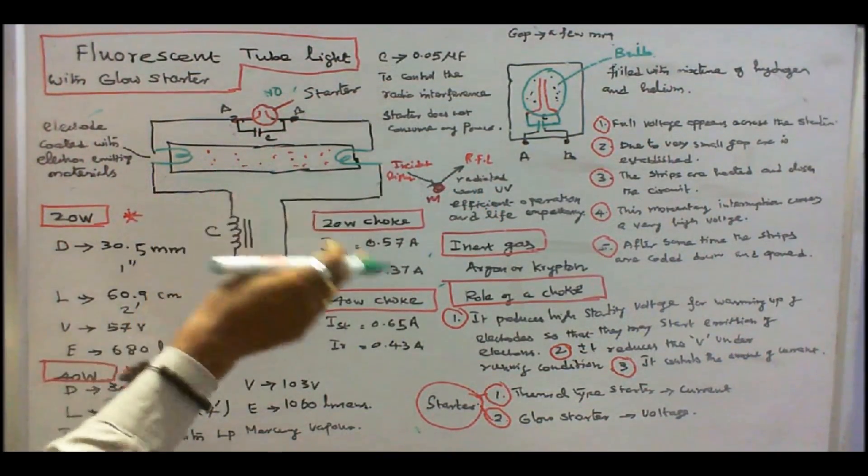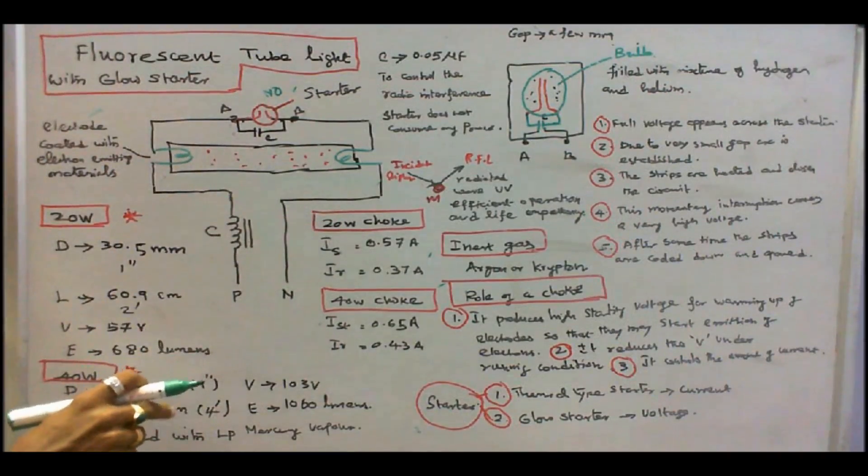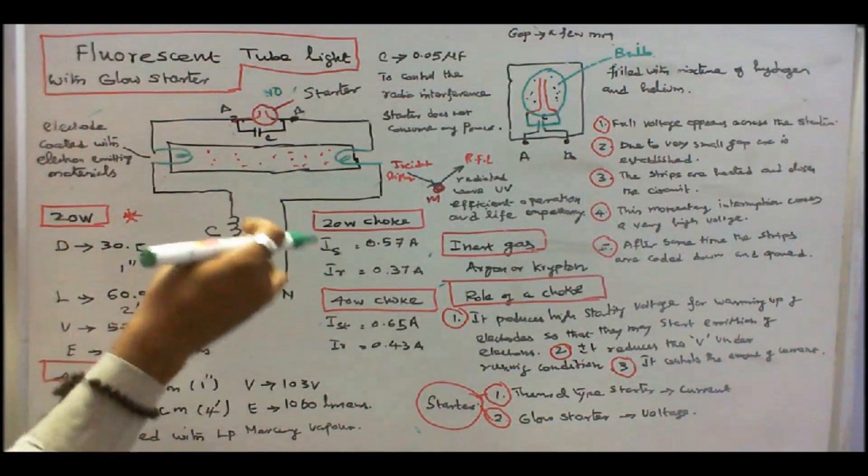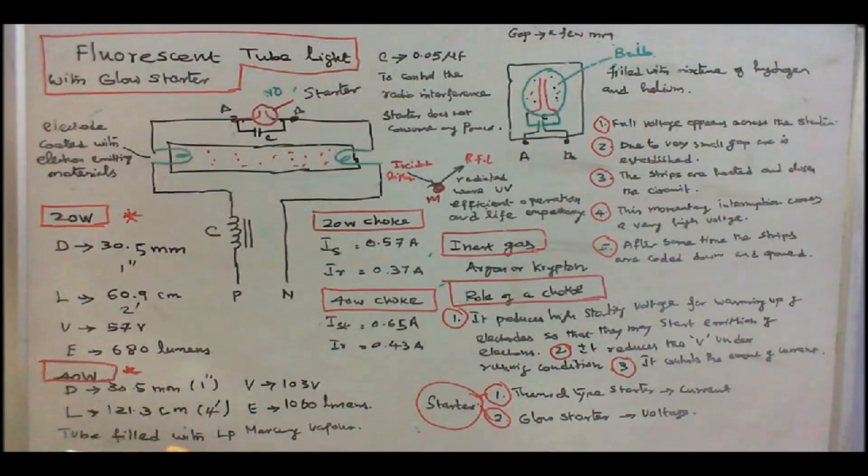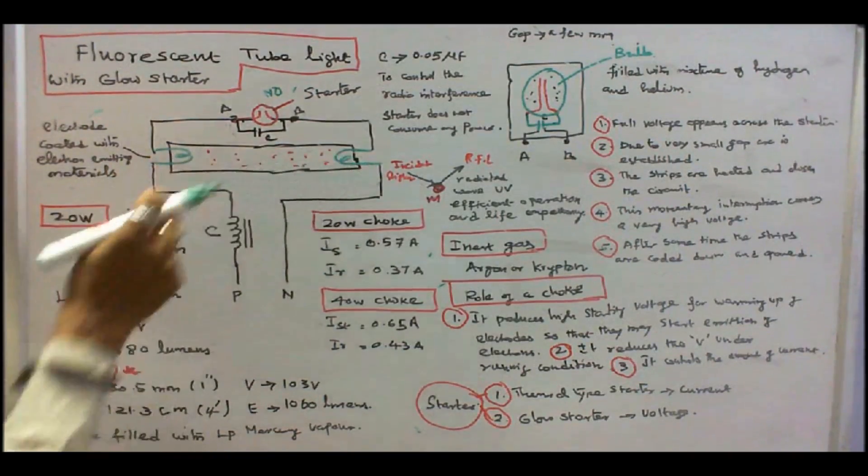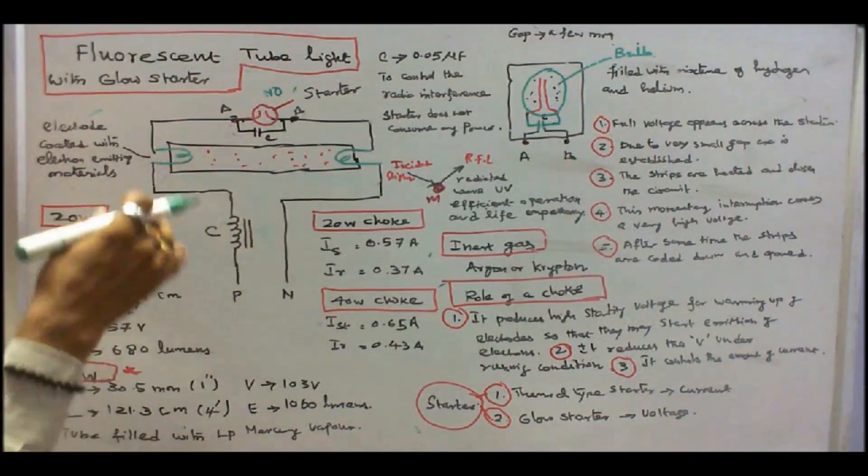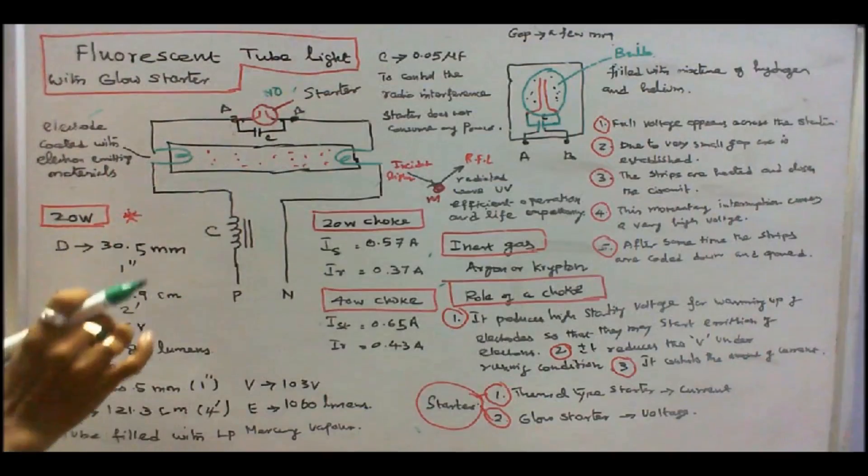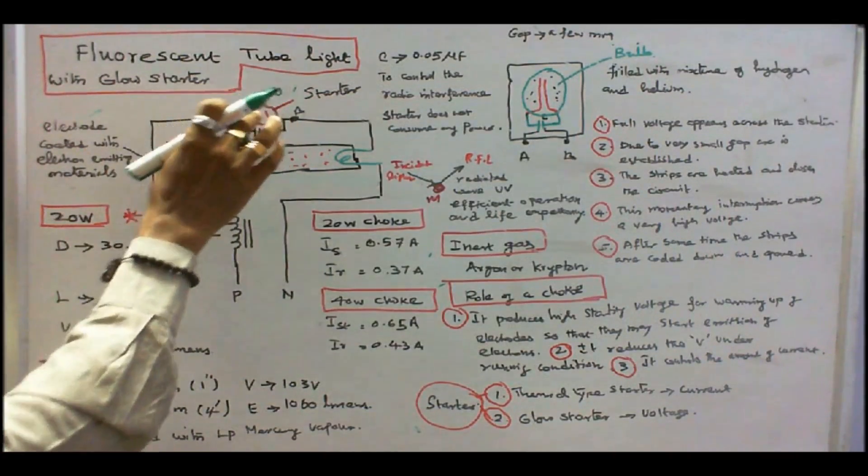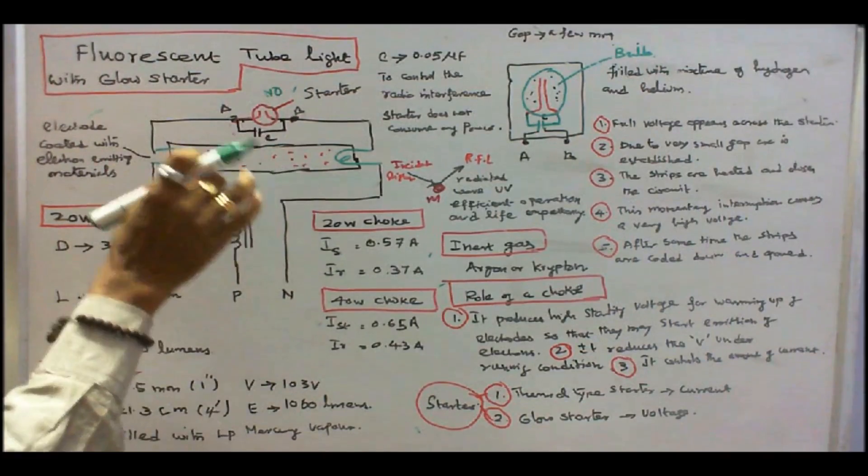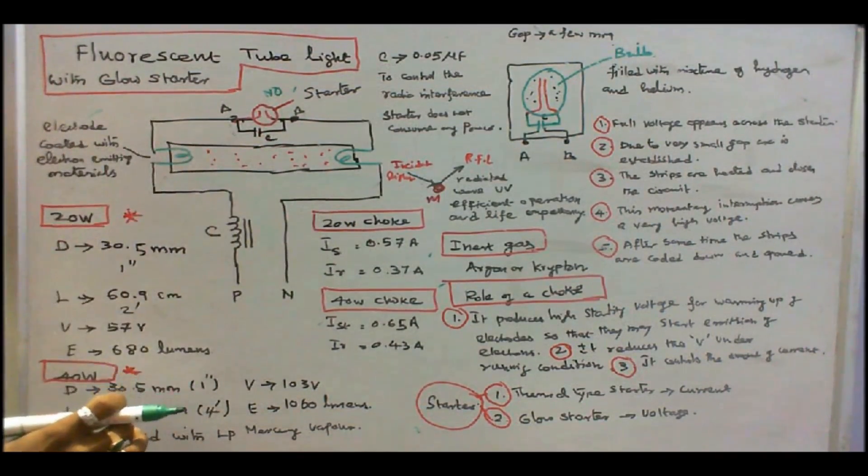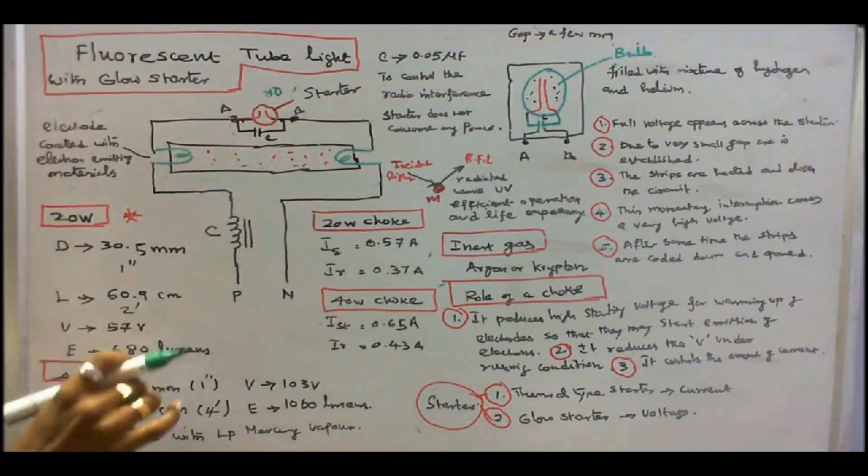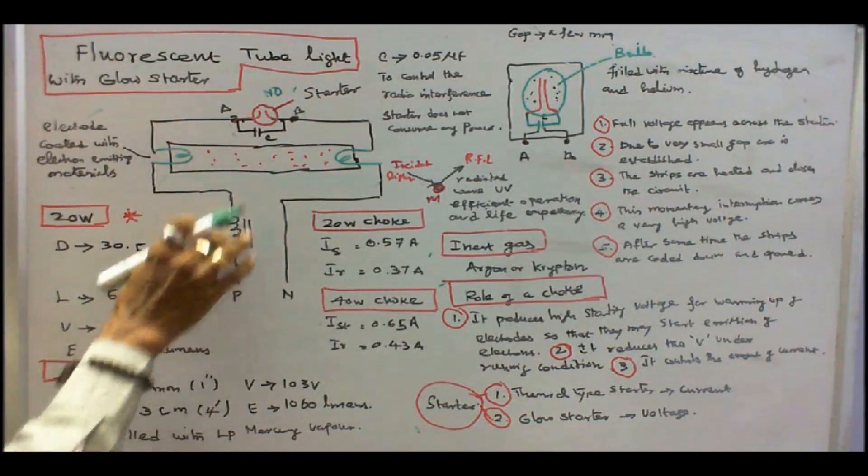Mercury is a dangerous material, but it is placed inside the tube light. And the tube light is coated with a phosphorus material or a fluorescent material to get different colors. Here there are two electrodes. The electrodes are coated with the electron-emitting materials. The third is a starter. The starter role is to give a momentary interruption in the choke. For initial operation, for initiation process, we need 1000 volts. That can be achieved with the help of a choke and a starter.